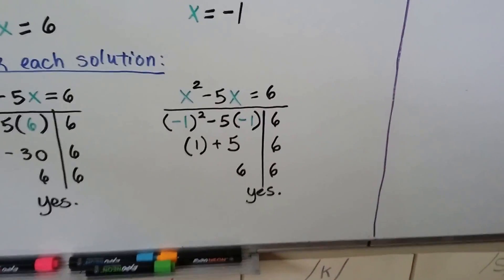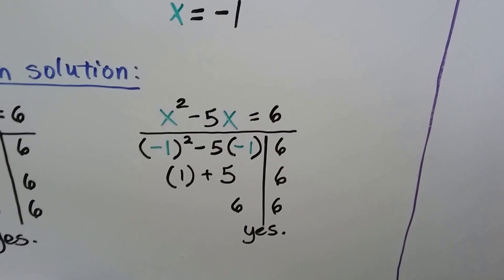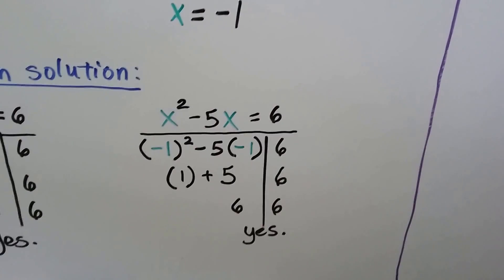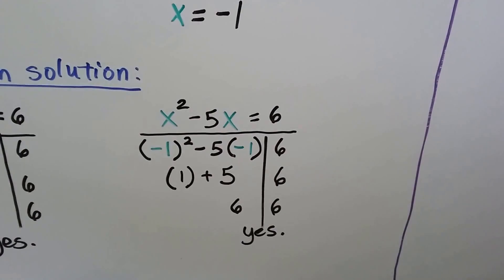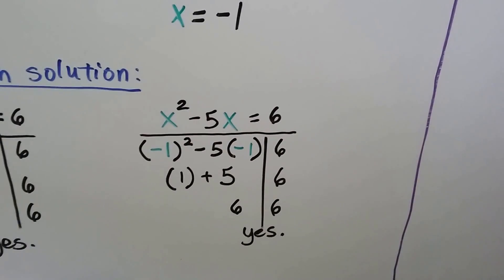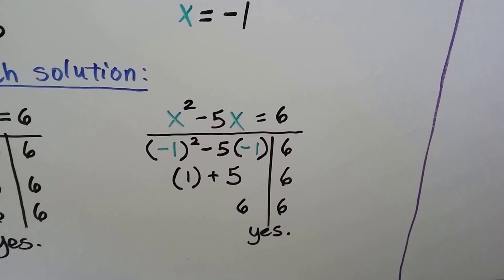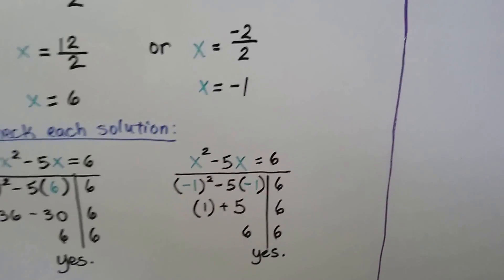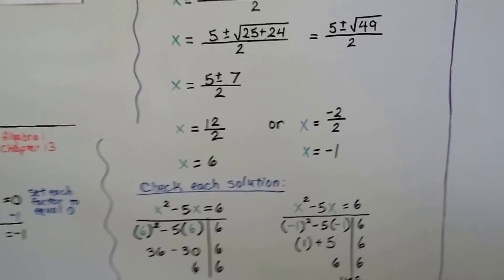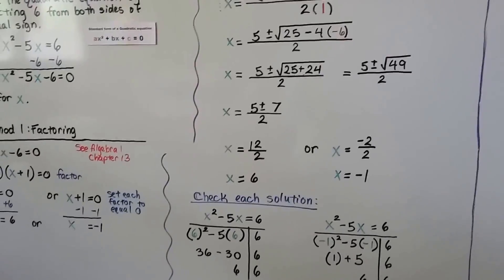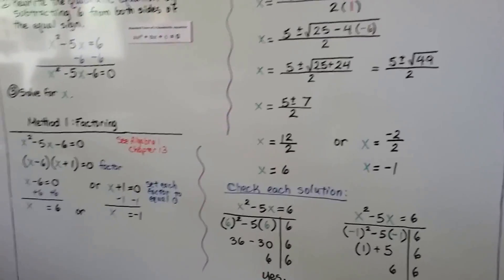For x = -1, we put a -1 wherever the x is. And -1 times -1 is a positive 1. And -5 times -1 is a positive 5, so we have 1 + 5. That's a 6. So yes, that worked. We have two good solutions. x can be either 6 or -1.